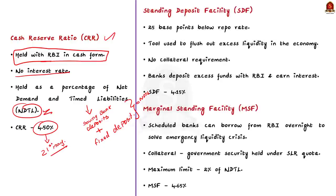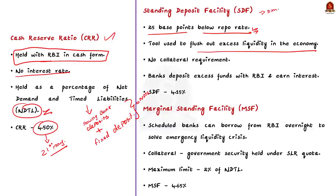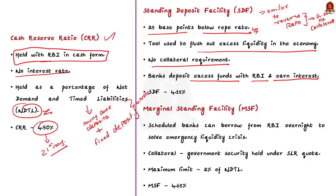RBI recently introduced the standing deposit facility as part of its policy rate. The SDF rate is fixed at 25 basis points below the repo rate. Currently, with the repo rate at 4.40%, the SDF rate is 4.15%. SDF is a tool used by the RBI to flush out excess liquidity in the economy. It is similar to the reverse repo rate — banks park their excess funds with the RBI. But unlike reverse repo, where RBI must provide government securities as collateral, in case of SDF there is no collateral requirement. Banks can deposit their excess funds with RBI and earn interest without any collateral.